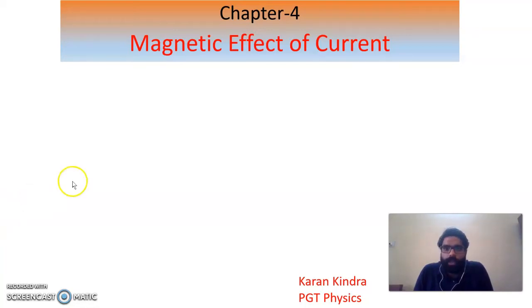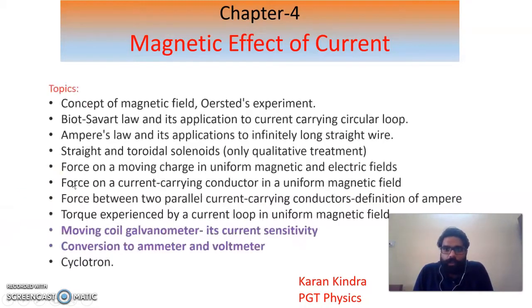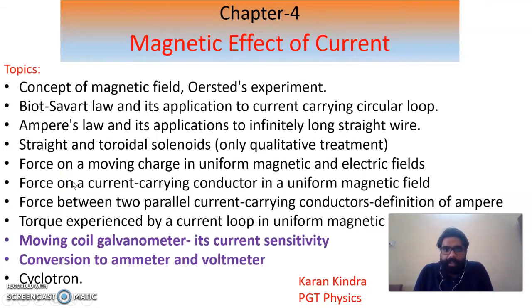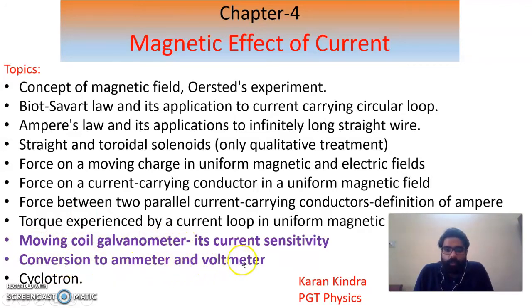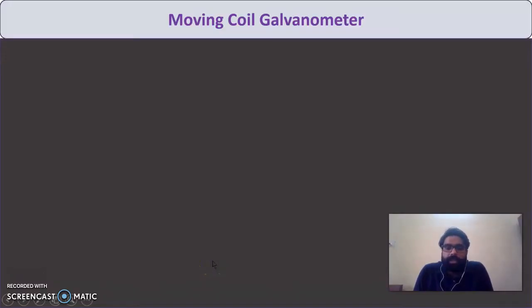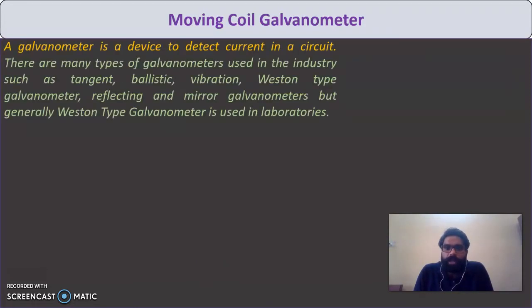Hello students. We are doing chapter 4, that is magnetic effect of current, and today we will study the last topics of this chapter: moving coil galvanometer and conversion of galvanometer to ammeter and voltmeter. We will study these one by one. It is a very important topic. So, what is a moving coil galvanometer?